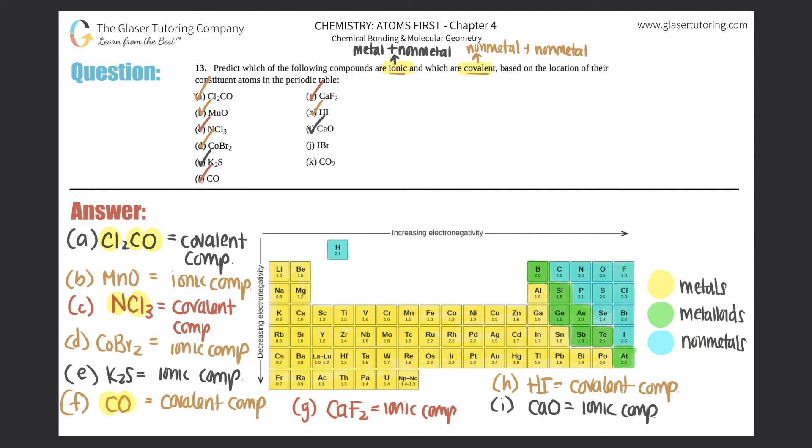J, IBr. So we have iodine and bromine. Where's iodine? Iodine's over here. Bromine's right above it. Two non-metals. So this would be a covalent compound.